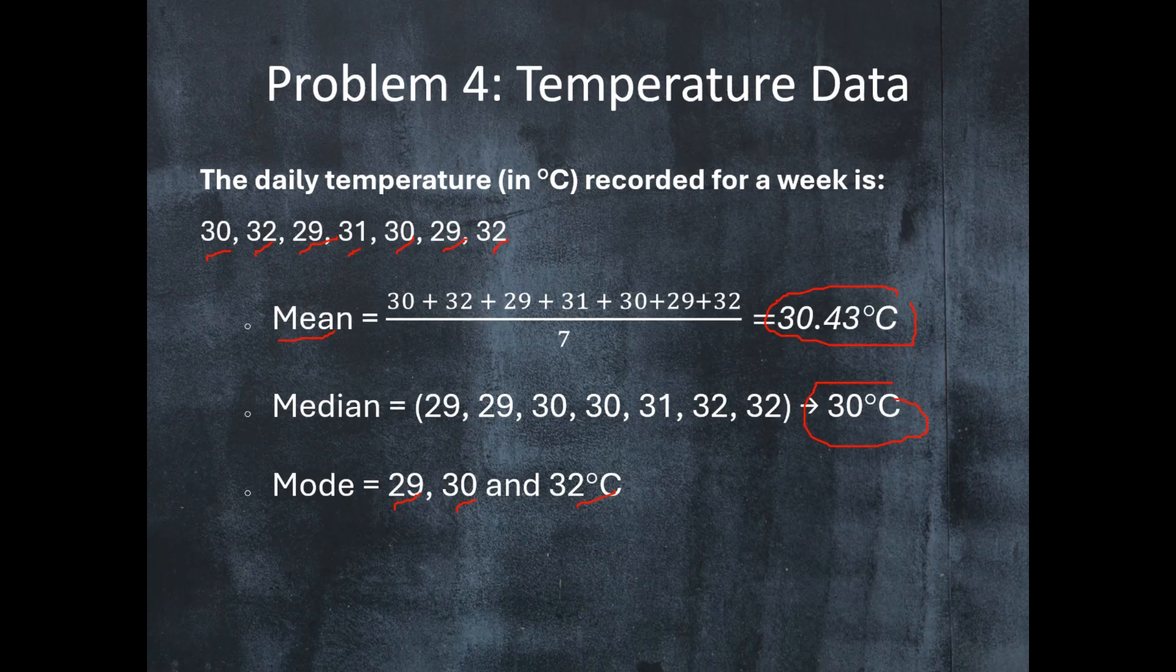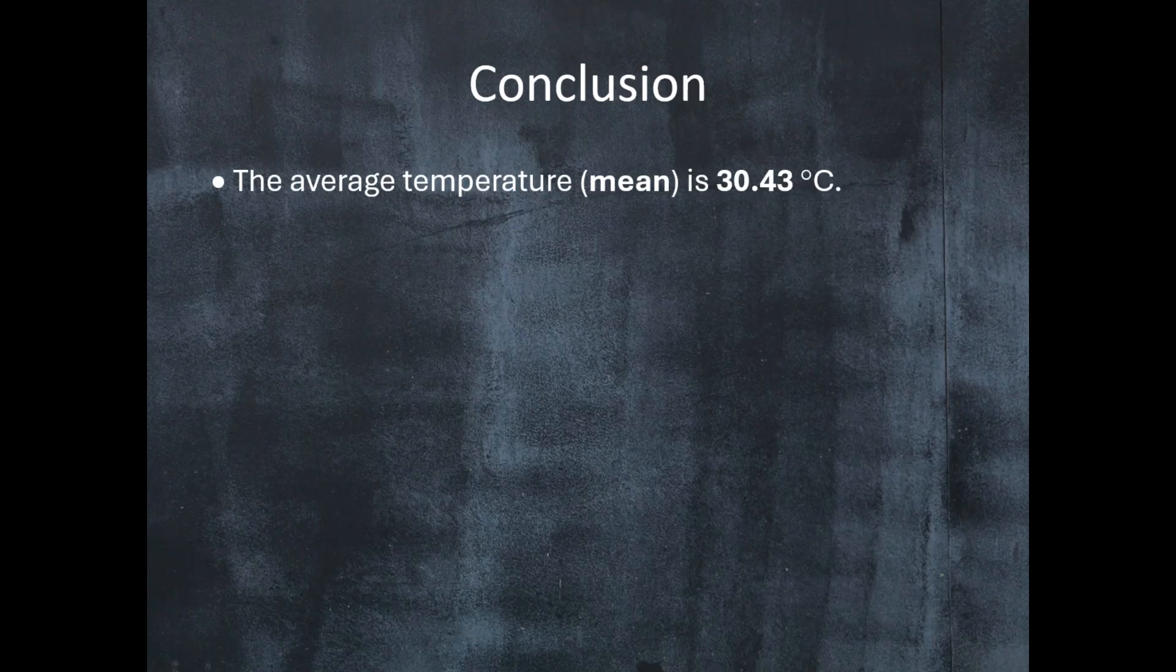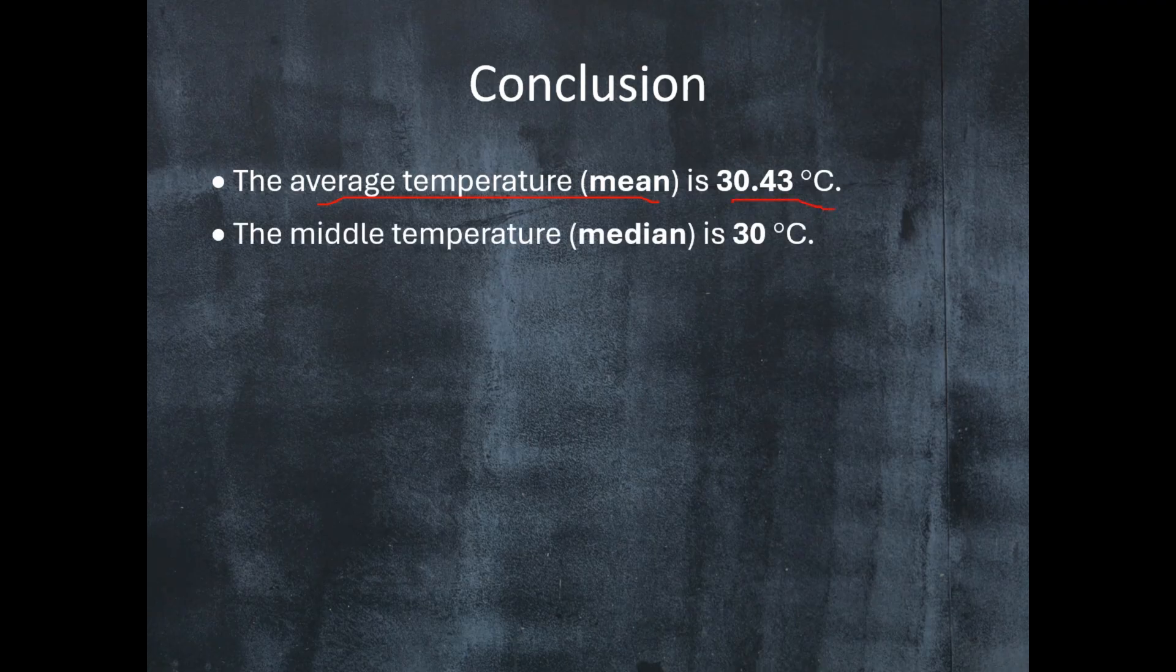Now based on these measures that we have computed, what conclusion can we draw from this data set? First, we can say that the average temperature or mean is 30.43 degrees Celsius. Another thing is that the middle temperature or median is 30 degrees Celsius.